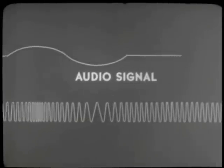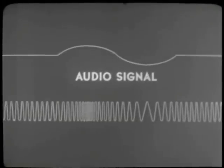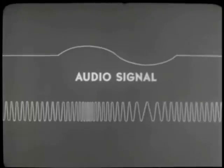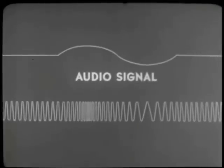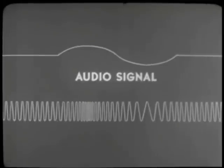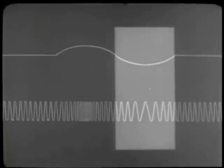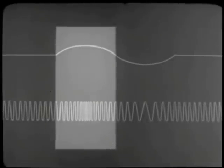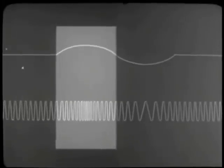When the positive half cycle of the audio signal is added, it causes the carrier to rise above its rest frequency, as evidenced by the narrow spaced waves. This is an audio signal of one complete cycle with a corresponding frequency modulated RF wave underneath it. A variation of the amplitude in the audio signal is accurately reflected by a frequency variation or modulation in the RF carrier.